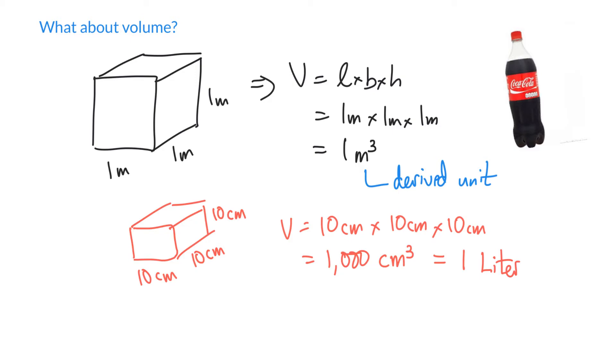We often find an even smaller unit is more convenient. We can go to a cube that is just 1 centimeter on an edge. Here's 1 centimeter by 1 centimeter by 1 centimeter. We can see the volume for this is just going to be 1 times 1 times 1, centimeters times centimeters times centimeters, that is centimeter cubed.